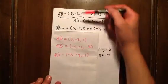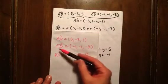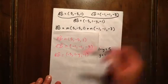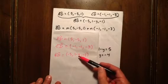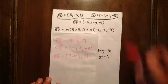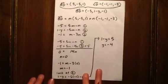So AD is (5, -5, 1). CD is (-1, -1, 3). And BD is (-5, 1-y, -1). Okay, well let's set it up.